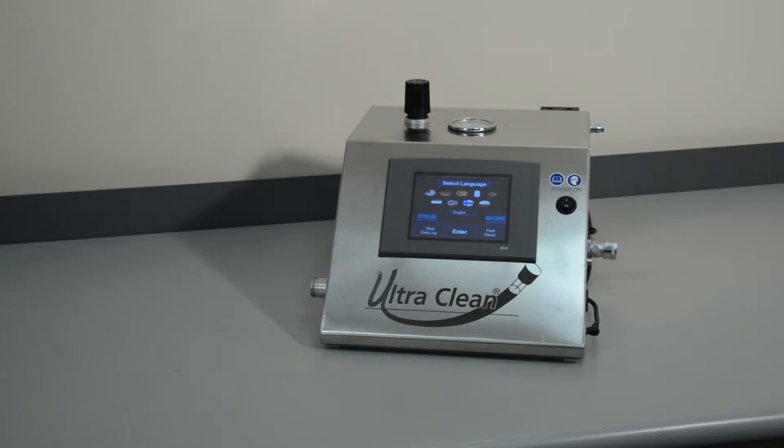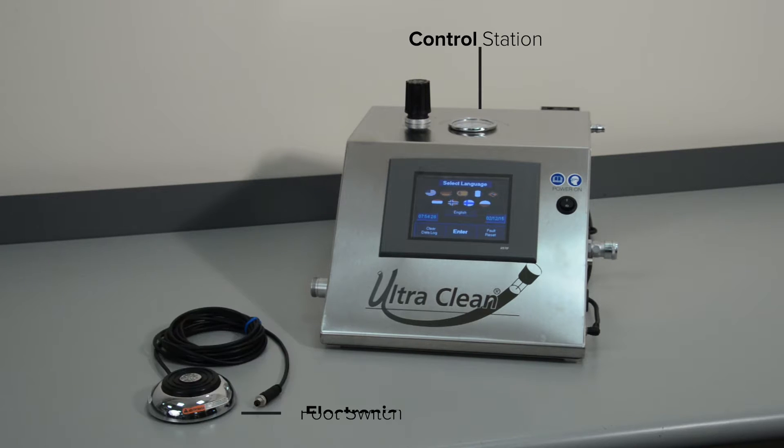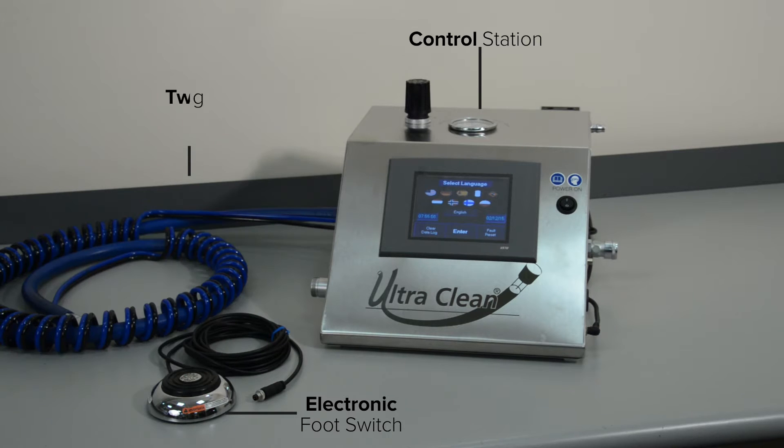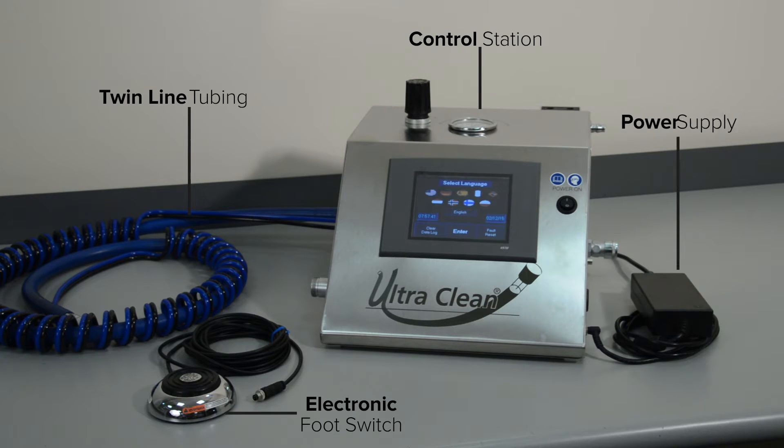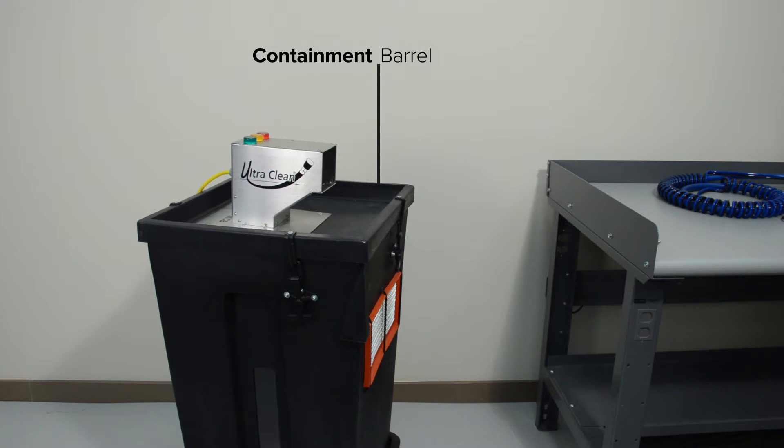All PVS-G3 orders include the following components: the PVS control station, an electronic foot switch and cable with a 4-pin keyed connector, twin-line pneumatic tubing and a half-inch by 10-foot air hose, a 24-volt DC power supply, and the containment barrel with a yellow electric cable with keyed 8-pin connector.